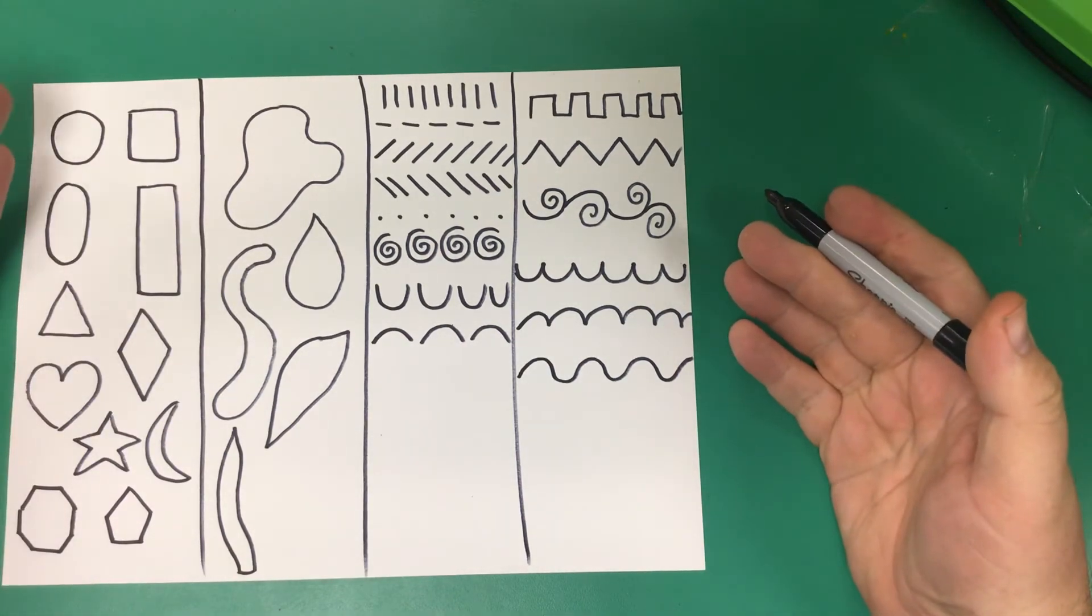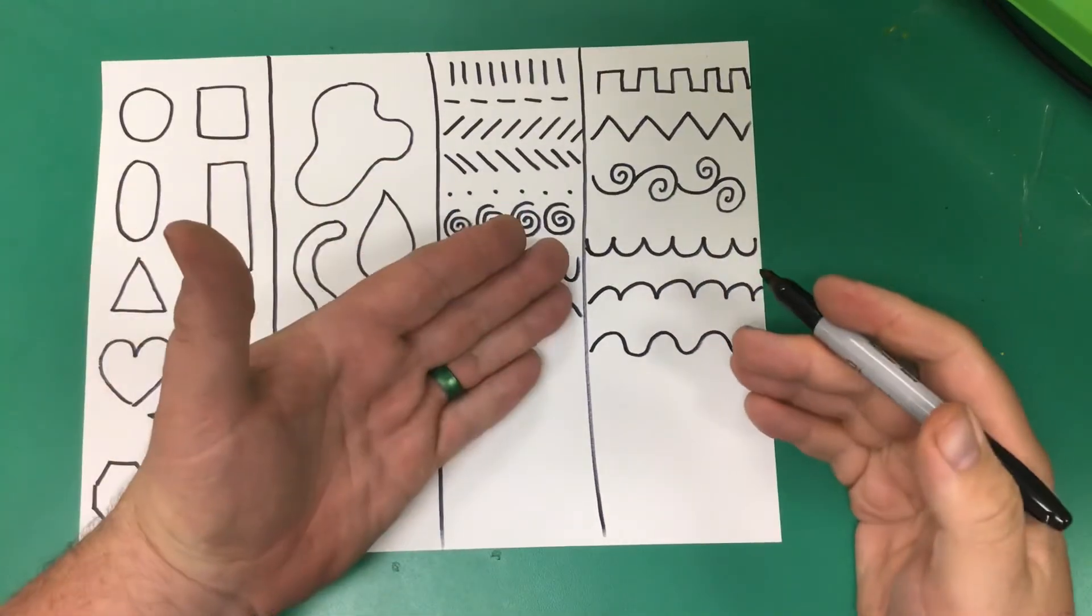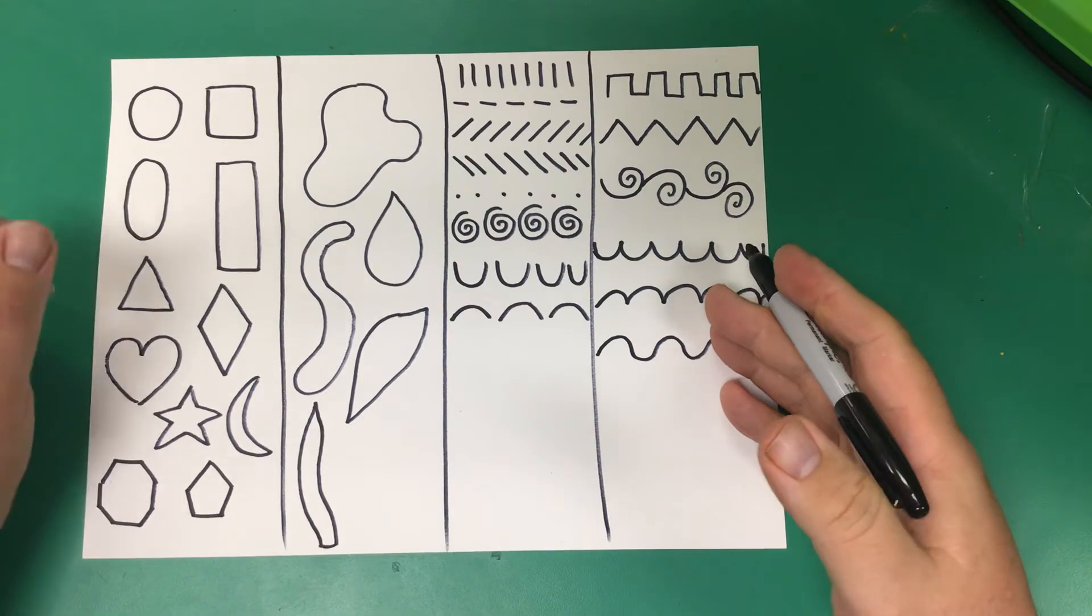All right. So we've made geometric shapes, organic shapes, lines, and line combinations.